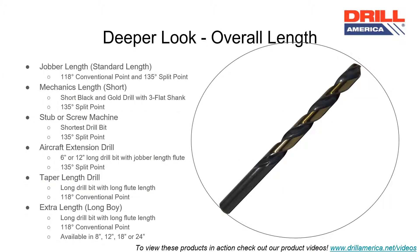Drill bits are available in different lengths to fill a customer's needs. Jobber length, the most commonly sold drill bit in our catalog, is the standard length drill bit. Mechanics length drills are slightly shorter than jobber length drill bits. Stub length drill bits, also called screw machine drill bits, are short length drill bits. Aircraft extension drill bits come in either 6 inch or 12 inch long, but have the same flute length as a jobber length drill bit.